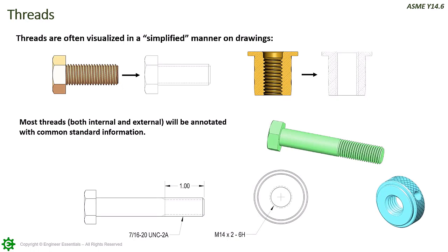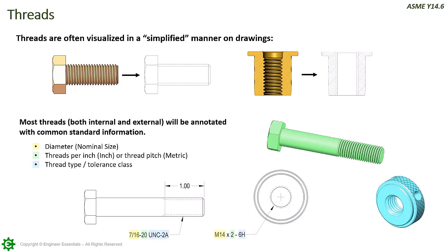Most threads will be annotated with certain standard information: diameter, threads per inch for inch threads or thread pitch for metric, thread type or tolerance class, and depth or length if applicable.